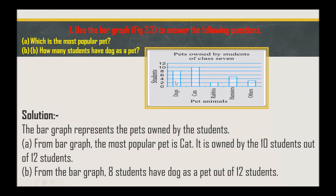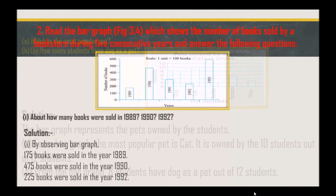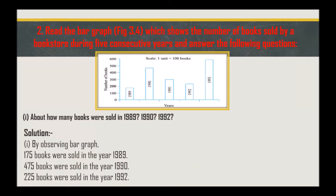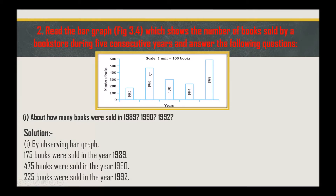The second question says: read the bar graph which shows the number of books sold by a bookstore during five consecutive years and answer the following questions. The scale is one unit equals to 100 books. About how many books were sold in 1989, 1990, and 1992? From the bar graph: in 1989, 175 books were sold; in 1990, 475 books were sold; and in 1992, 225 books were sold.